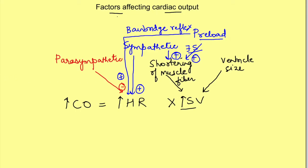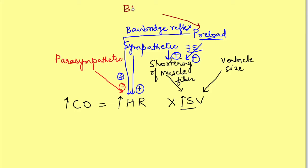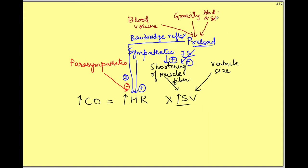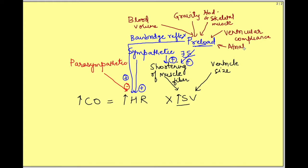When we think about preload we should be very clear that there are multiple factors which affect preload itself. Preload is first of all affected by blood volume — increase in blood volume will increase the preload. Then there is the effect of gravity; if we change our position from lying to standing, the preload decreases. Contraction of skeletal muscles and abdominal muscles also affects preload. Then there is ventricular compliance — if the ventricle is very stiff it will not relax, and if it doesn't relax it will affect filling of the heart. Finally, atrial contraction causes the last push and is responsible for approximately 10% of filling of the ventricles, so it also affects preload.